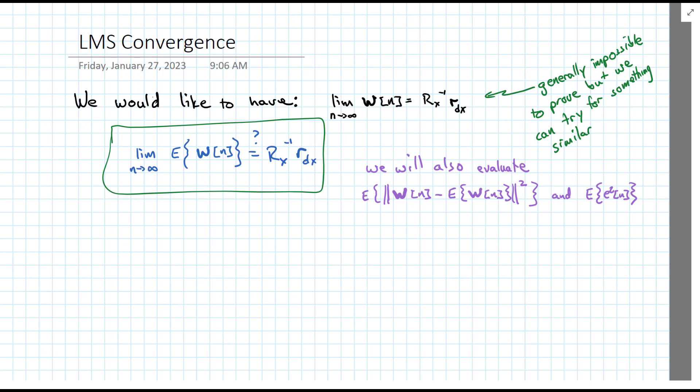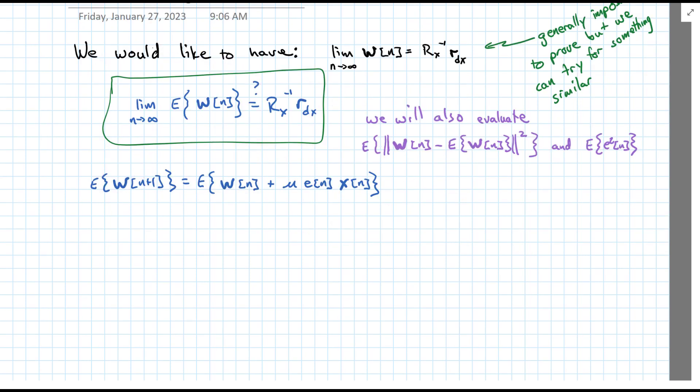That's in the future, though. Let's start by taking the expected value of our update equation, w n plus 1 is equal to the expected value of w plus mu en xn. So let's expand things out, somewhat in the manner that we've done before, by substituting in our expression for en in terms of d and w transpose x.